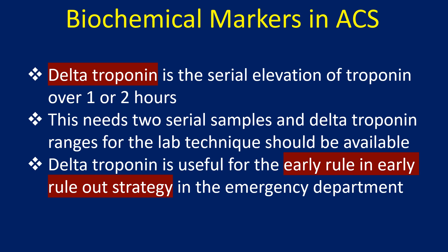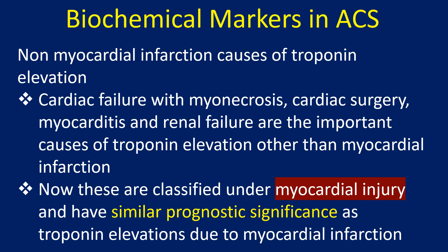Delta Troponin is the serial elevation of Troponin over 1 or 2 hours. This requires 2 serial samples and Delta Troponin ranges for the lab technique should be available. Delta Troponin is useful for the early roll-in, early roll-out strategy in the emergency department.